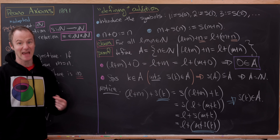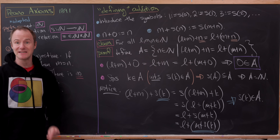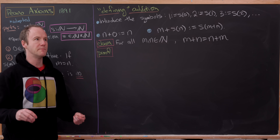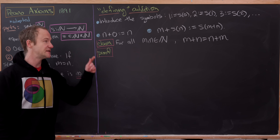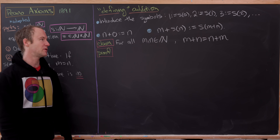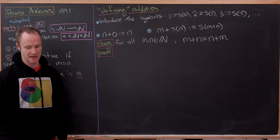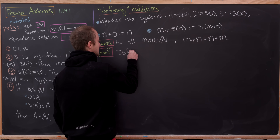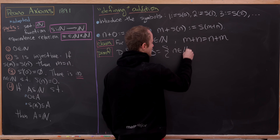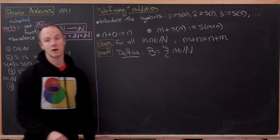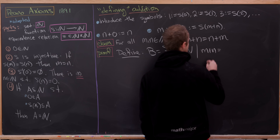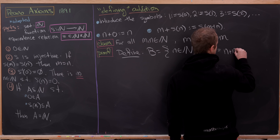Now let's sketch the proof of commutativity, leaving the details to you. We'll mimic the associativity proof: for all M and N in N, M plus N equals N plus M. Define a set B as all elements N in N such that M plus N equals N plus M — this should hold for all M.